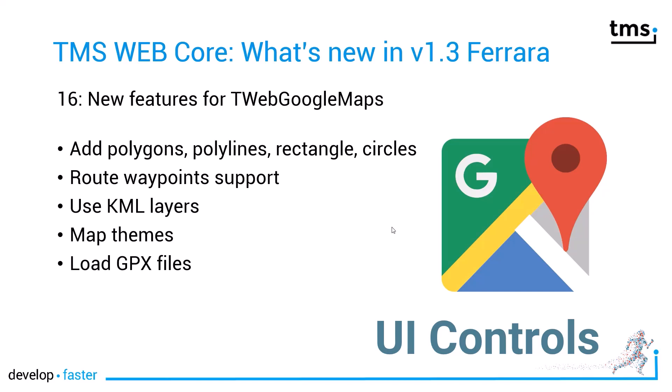A favorite feature: TWebGoogleMaps has finally caught up with the desktop variant. You can add polygons, polylines, rectangles, and circles. You can add waypoints to routes, use KML layers, and theme support. And another big feature — you can load your tracking data from GPX files and draw them on the map.